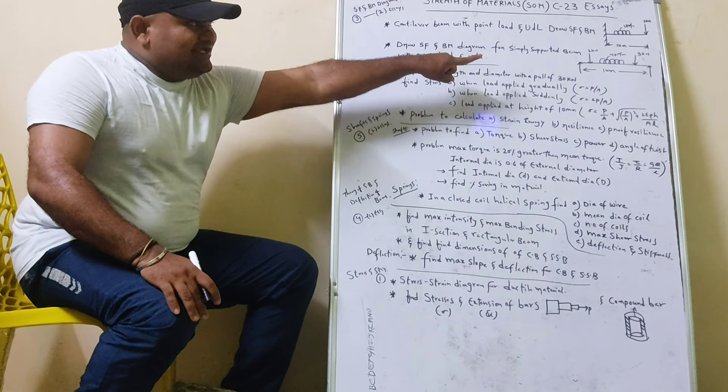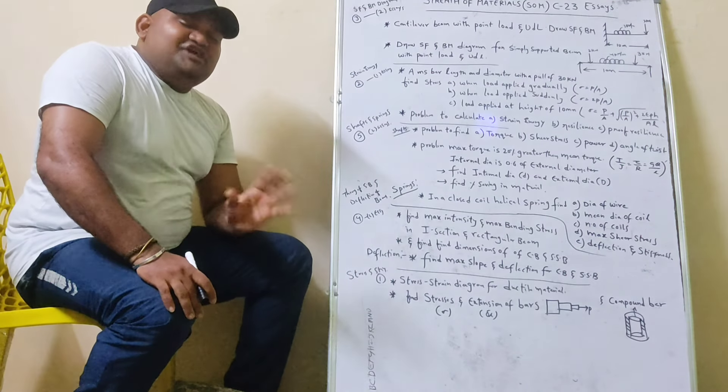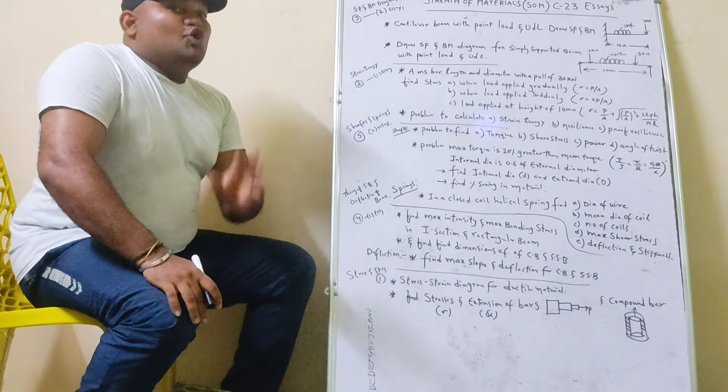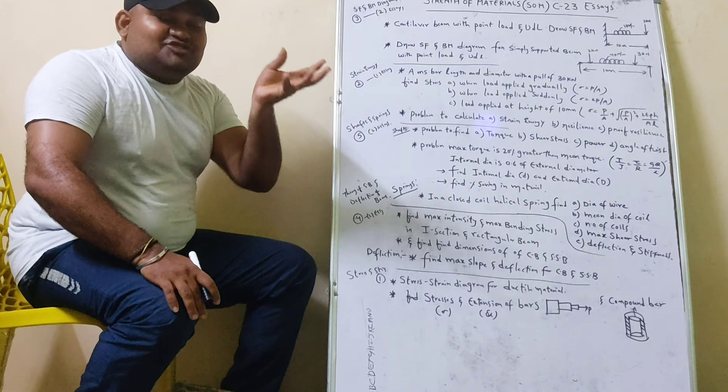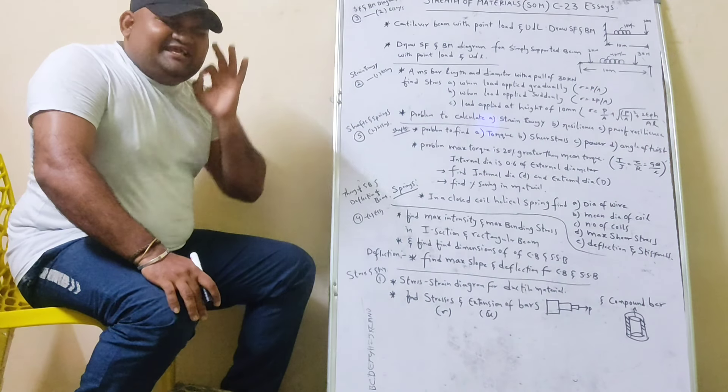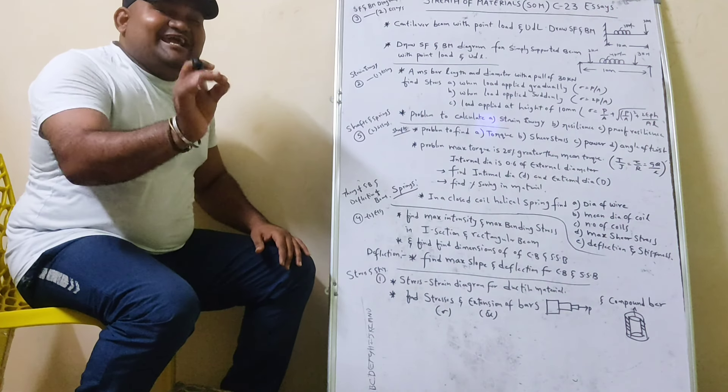Simply supported beam. Then point load is at the UDL. That's the shear force and bending moment diagrams. How many times do the diagram work? You can easily explain the first preference. Next, strain energy.